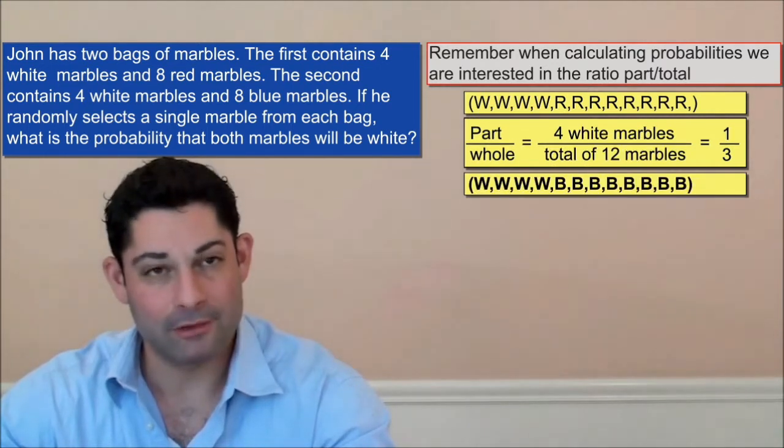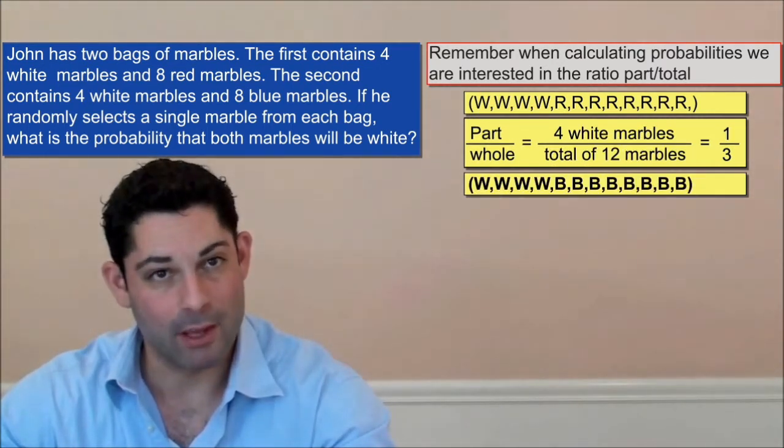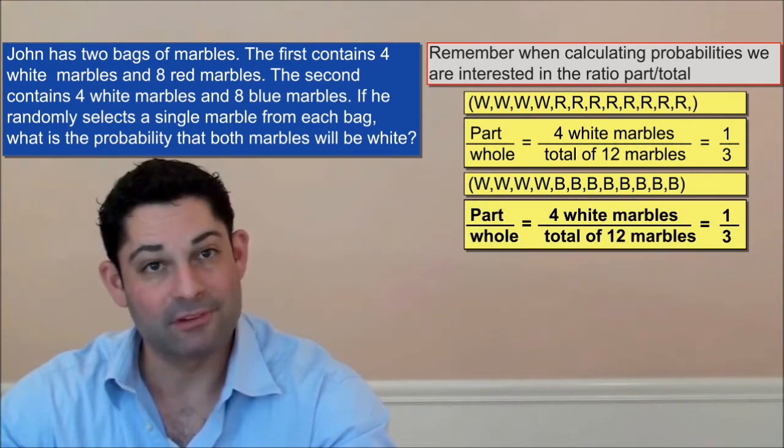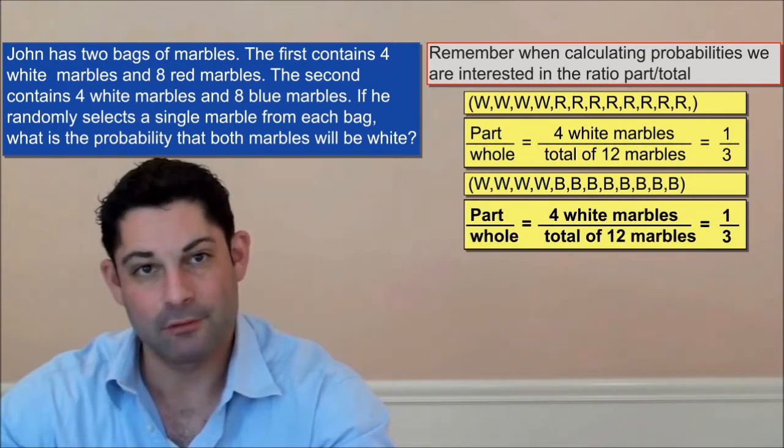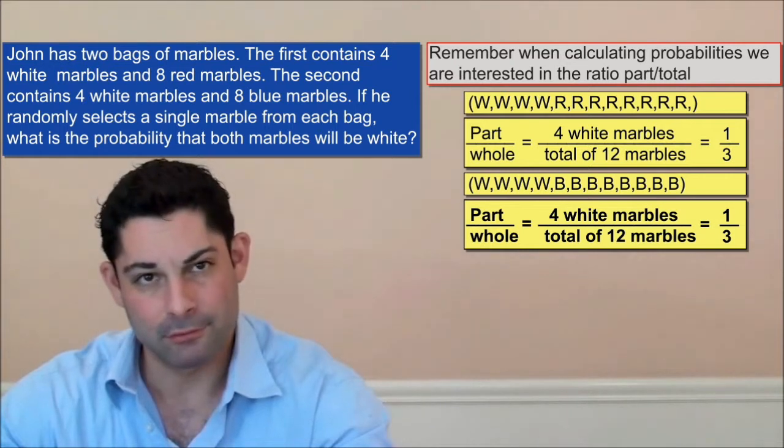The second bag also has twelve marbles, four of which are white, so the probability of selecting a white marble from the second bag is again equal to the ratio of four-twelfths, also reducible to one-third.